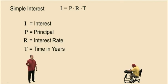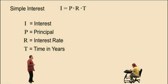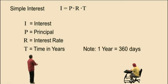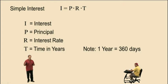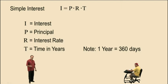Now here's where it gets tricky. In accounting calculations, they use a 360-day calendar, which means one year equals 360 days. We know a real year has 365 days — actually 365 and a quarter days, which is why we have a leap year every four years. But for accounting calculations, they use the 360-day calendar year.